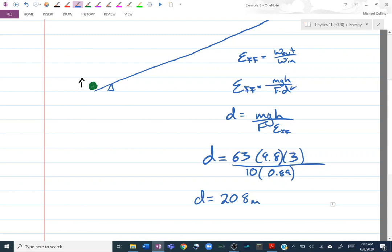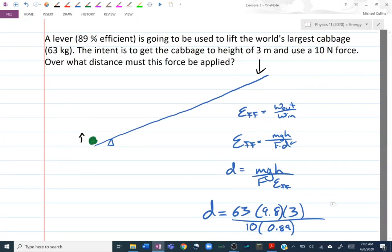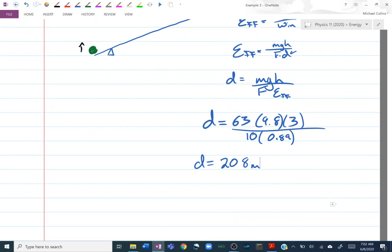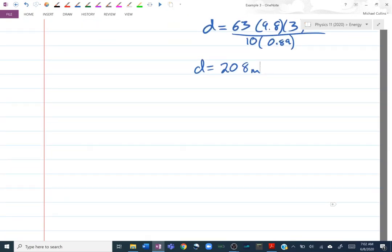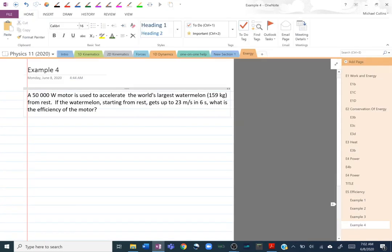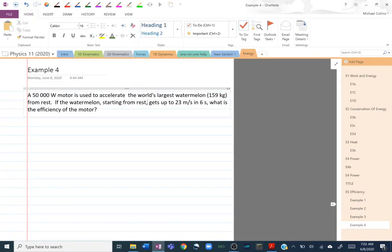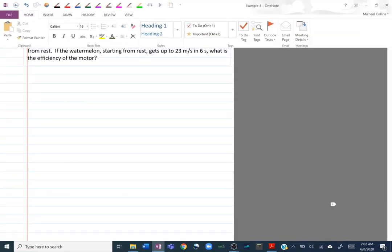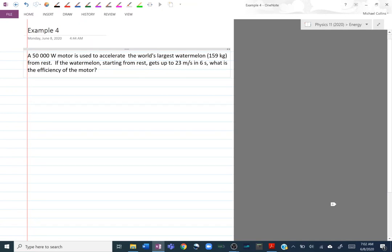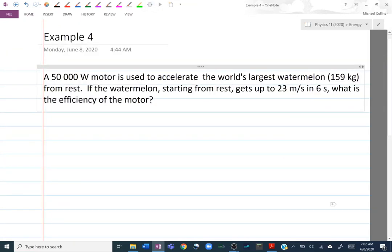I think when I did this calculation, if I was trying to do this in reality, I'd be like, wow, we're going to have to find a bigger force to use because 208 meters is not a realistic number. Our fourth and final example. A 50,000 watt motor is used to accelerate the world's largest watermelon, which is 159 kilograms, from rest. The watermelon starting from rest gets up to 23 meters per second in six seconds.